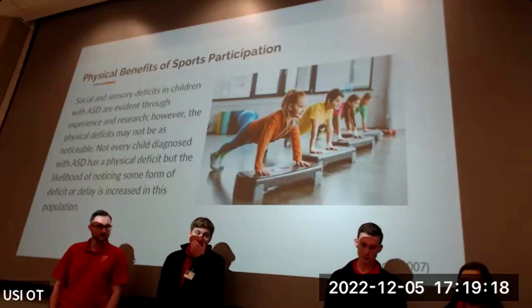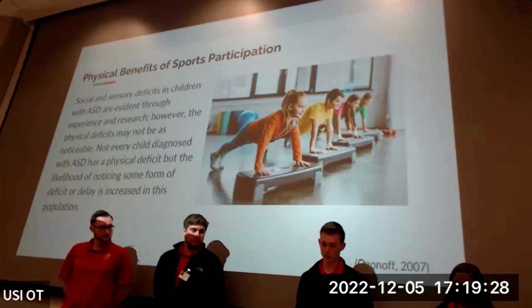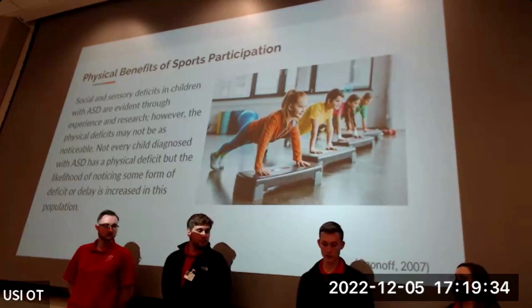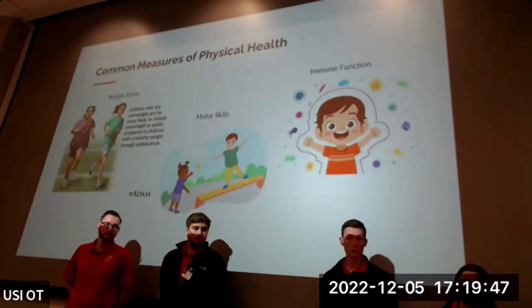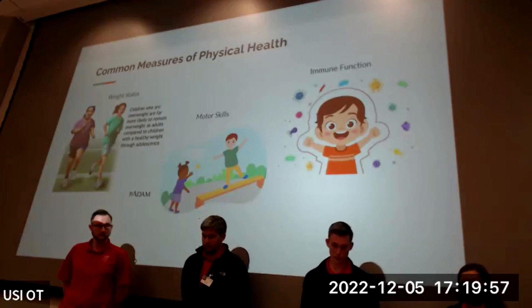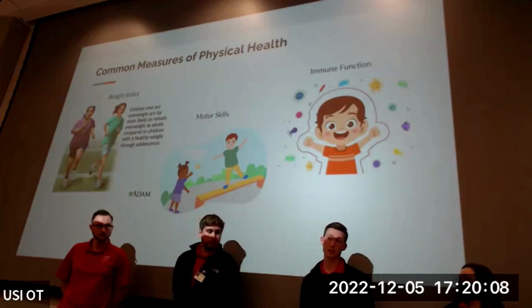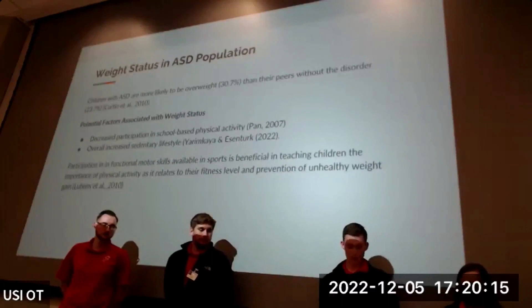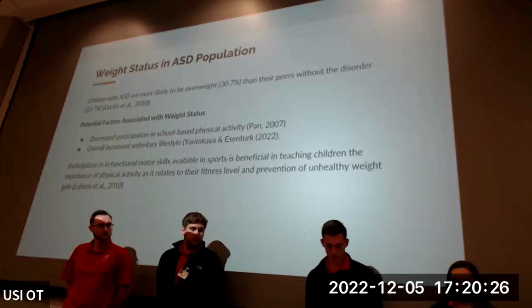Beyond symptoms of social dysfunction, sensory deficits, and mental health issues, there are also lesser-known physical deficits or delays in children with ASD. Note that children with ASD are not predetermined to have a physical deficit, but the chances of noticing some form of deficit or delay are increased in this population. Three major physical aspects researched for this presentation include overall weight status as it relates to height and age, motor skills—both gross and fine—and immune function, which determines whether a child will be able to participate in physical activities.